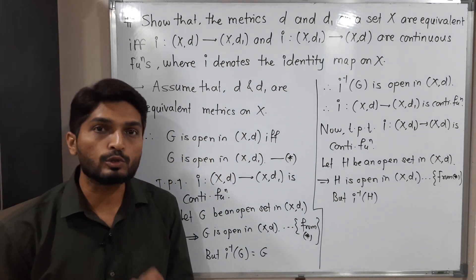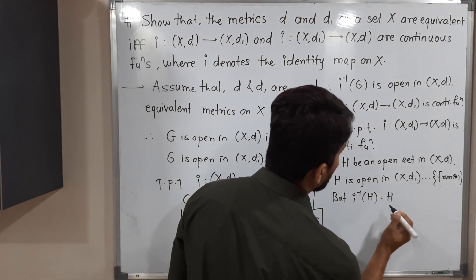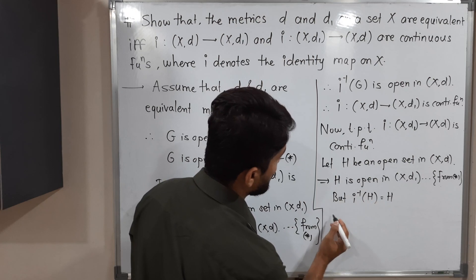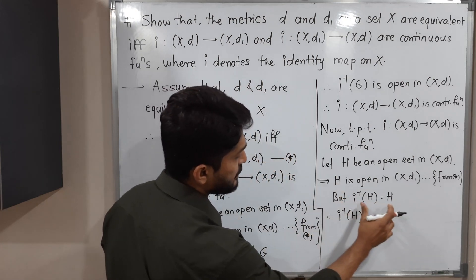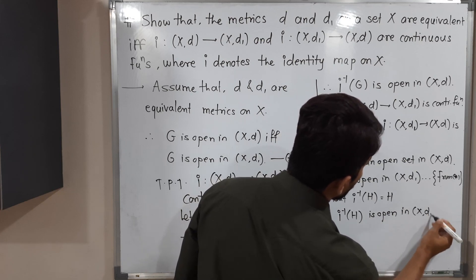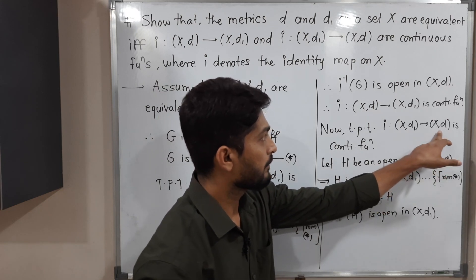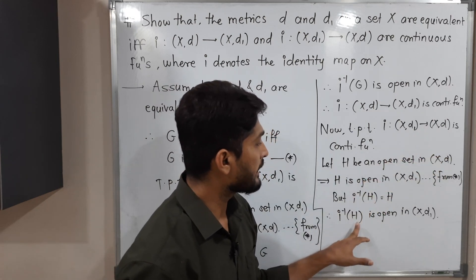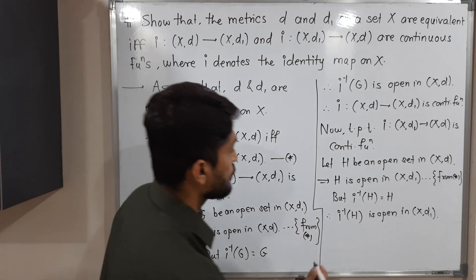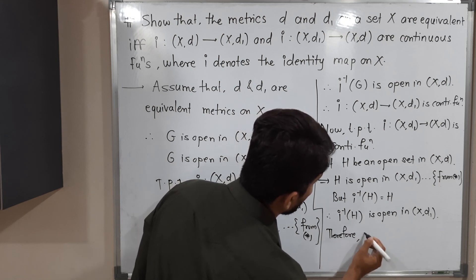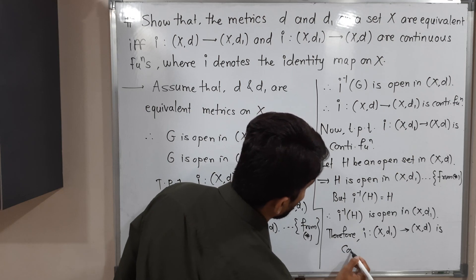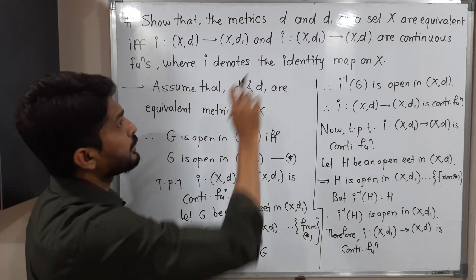Since i is the identity function, i⁻¹ is also the identity, so i⁻¹(H) = H. Therefore i⁻¹(H) is open in (X,d1). We started with any open set H in (X,d) and proved its inverse image is open in (X,d1), the domain. Therefore i from (X,d1) to (X,d) is a continuous function. Both functions are now proved continuous.